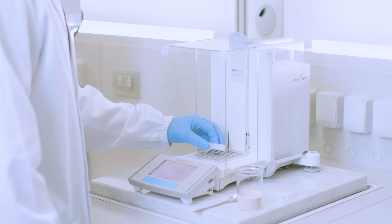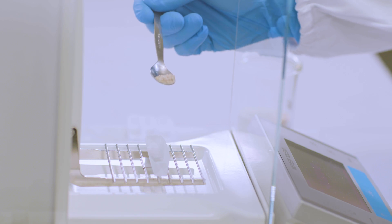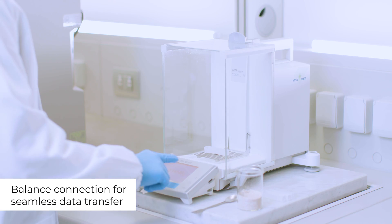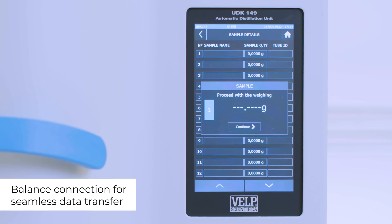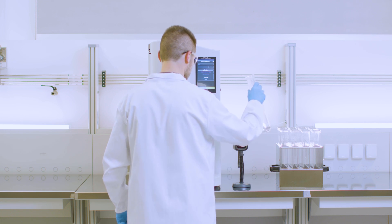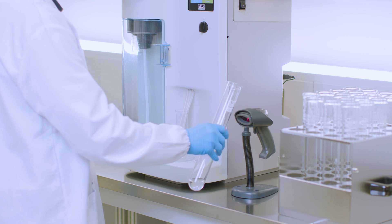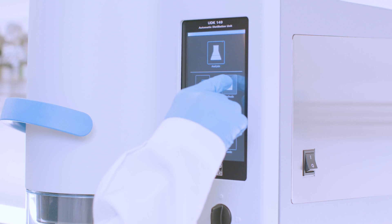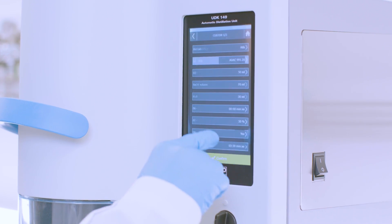To start, homogenize the sample and transfer it into a VELP test tube. Connect the UDK 149 to a balance for seamless data transfer. The optional barcode reader simplifies data management and speeds up the analysis preparation, avoiding transcription errors. Create a new method following the guided procedure.